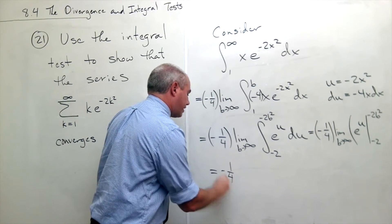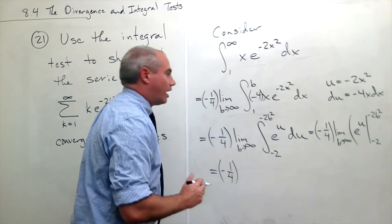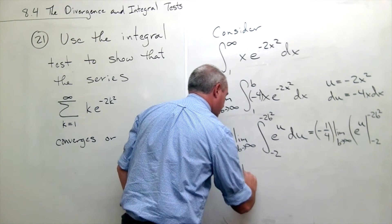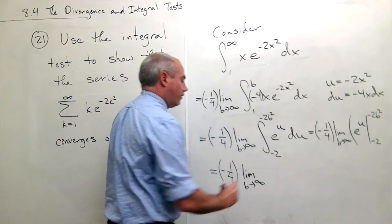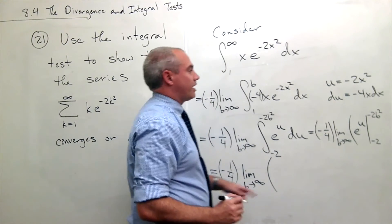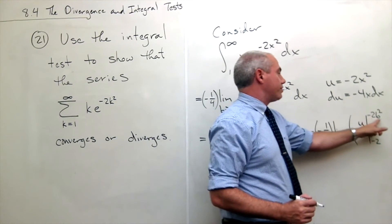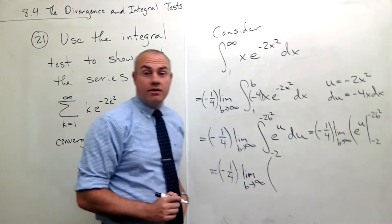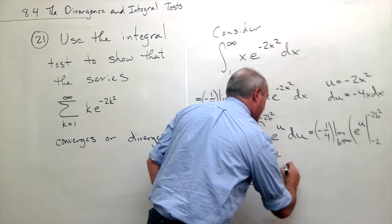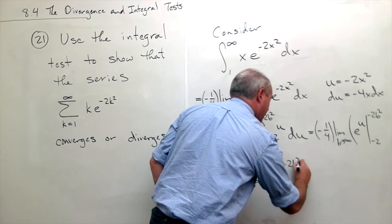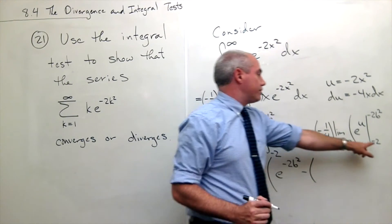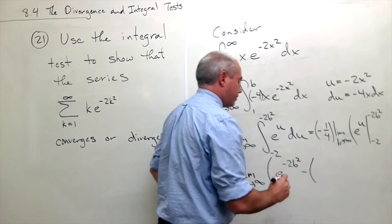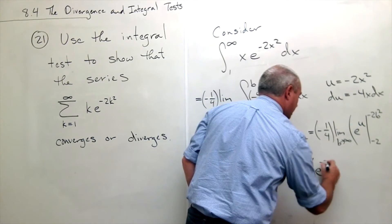Let's plug it in. I still have minus 1 fourth sitting up front. I still have a limit as b goes to infinity. Now let's plug things in. I plug in negative 2b squared to u and I get e to the negative 2b squared minus, plug in negative 2 and I get e to the negative 2.